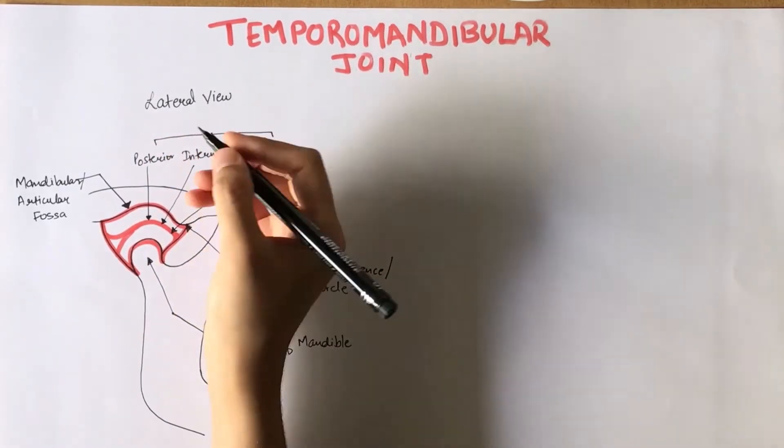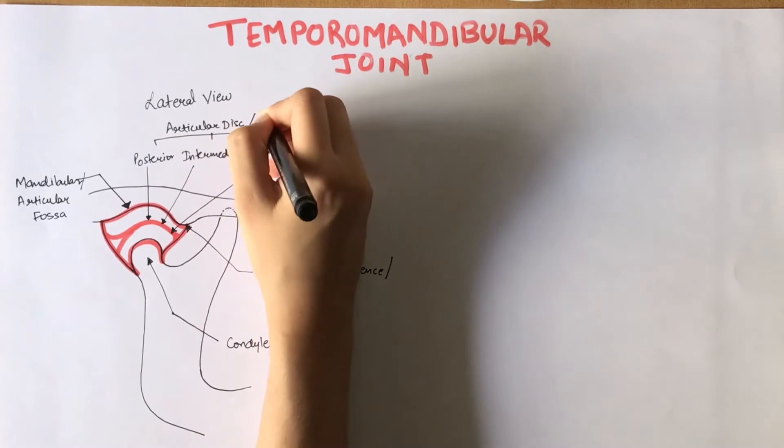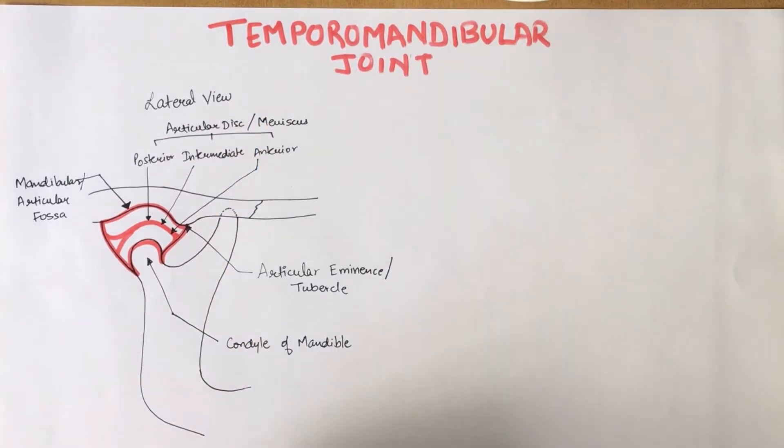Second, intermediate zone, and third, anterior zone. The articular disc is biconcave or oval in shape and it's thicker at the periphery and thinner at the central portion.